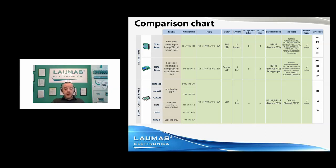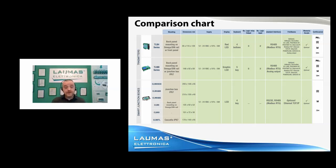Those are the features of the transmitters — common and specific. Let's look at a simple comparison chart showing the differences between the models to help you choose the right one. When developing a new application, ask yourself some basic questions. How many load cells are in your weighing system? If you have more than four, you can exclude the TLB4, which has only four inputs.